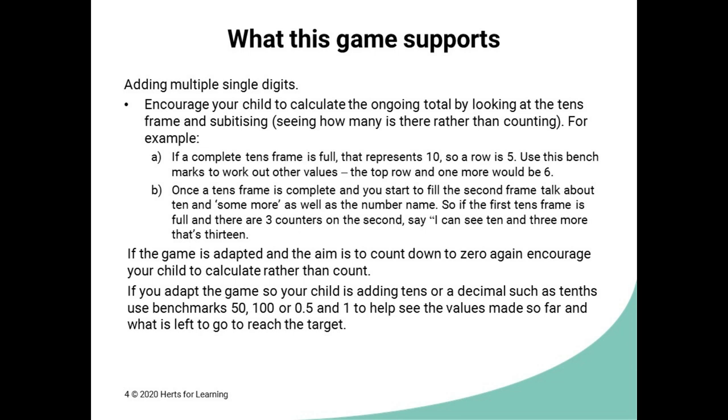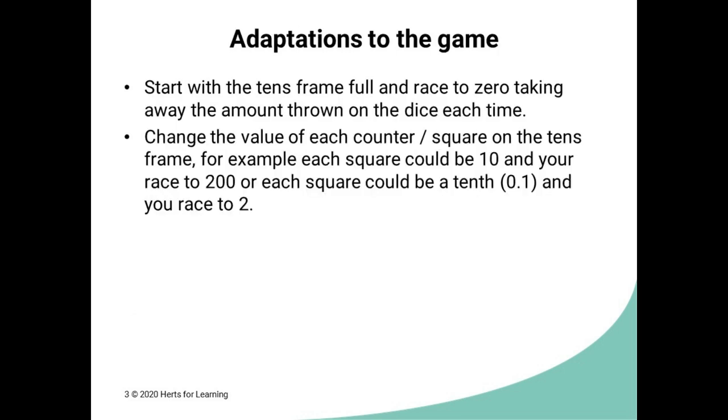If you've got slightly older children you could change the value of the counters. So each counter could be worth 10 so you're racing to 200 or each counter could be worth a tenth and you're racing to get to two. You can change the value of the counters to whatever you like to whatever they're rehearsing. You could change the value of the counters to a multiple if you wanted to so they're perhaps counting in threes. If you do this this would be great because you're going out of the normal times table range and they'd have to think about things like 17 lots of three.